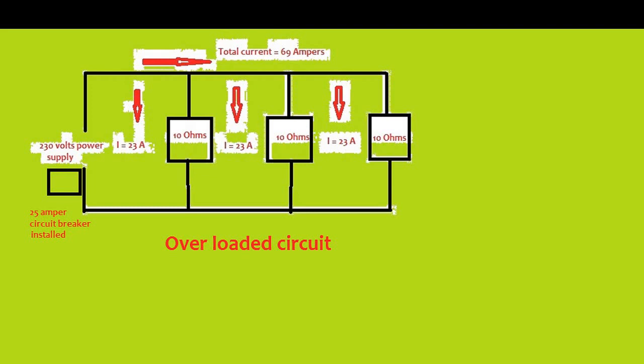We have a 25 amperes circuit protection installed, and we have 3 load resistances in parallel of 10 ohms each. This condition will signal the circuit protection to trip off due to overcurrent passing through the circuit.